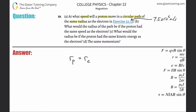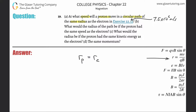Since we're talking about curved paths in a magnetic field, we should use the formula on the right-hand side: the radius of a curved path a proton moves in while in a magnetic field equals the mass of the proton times the velocity of the proton divided by the charge of the proton multiplied by the magnetic field. And that will equal the same expression for the electron.